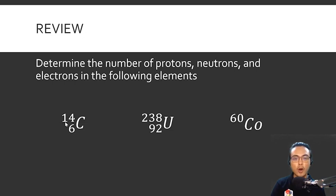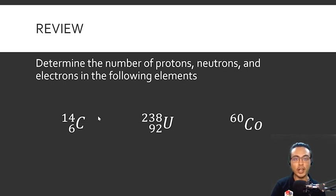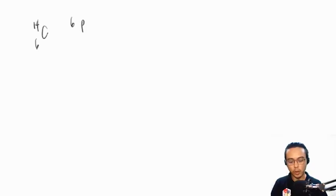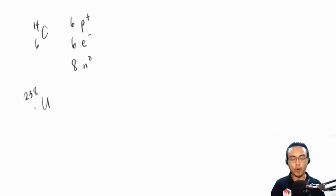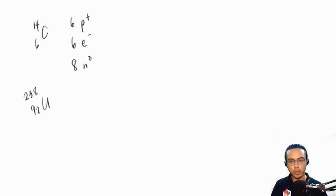Always remember: the mass number is always the sum of the number of protons and neutrons. The number of electrons equals the number of protons when the atom has no charge. If the atom is positively charged, you have more protons than electrons; if negatively charged, you have more electrons than protons. For carbon-14: 6 protons, 6 electrons, and 8 neutrons.